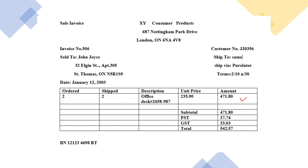The subtotal is 471, and then you add the taxes — GST and PST — to get a total value of 557 cents. This is the invoice after the transaction.